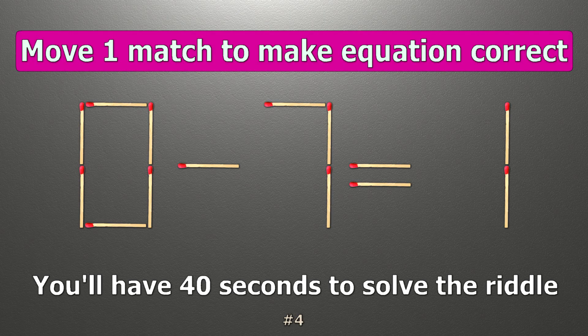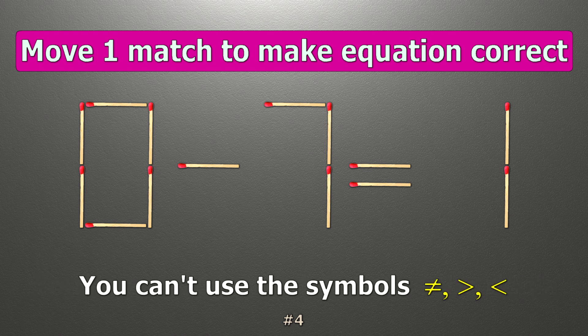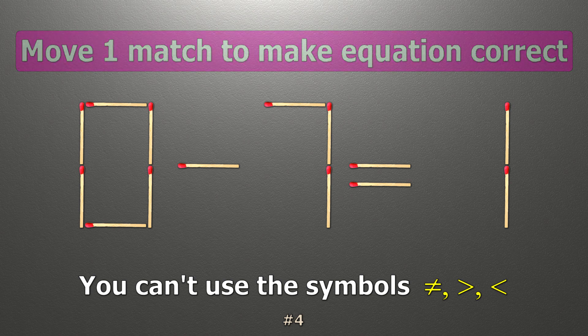We have the equality 0 minus 7 equals 1. Our equality is wrong. We need to move one match to make our equality correct.